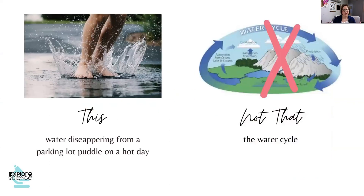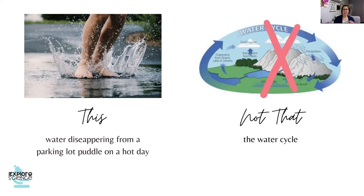So this is the example I always love to use. It's not the water cycle — a lot of times we think about these big models, these big concepts, the water cycle. It's not that. What it is, is water disappearing from a parking lot puddle on a hot day. That's something that students have an immediate connection to. They've seen it, probably in their own lives, but even if they live somewhere they've never seen it, they've seen it in movies. They can relate to it.